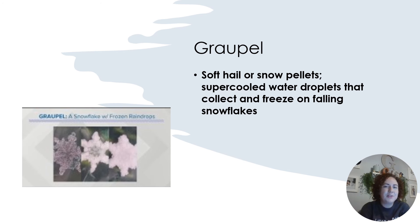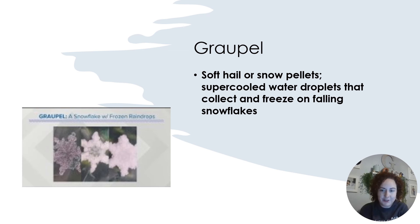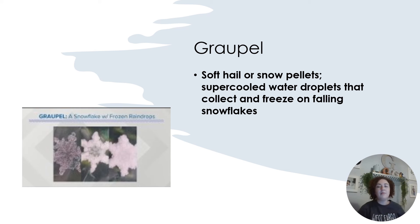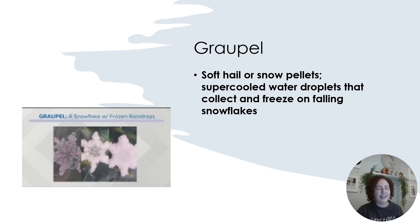Graupel. Graupel is so much fun. Graupel is soft hail or snow pellets — super cold water droplets that collect and freeze on falling snowflakes. We actually got graupel back in 2022–2023, and maybe even the year before that. But as I'm recording this, it's 2024 and I have yet to experience any graupel this winter. Essentially it's just really fuzzy snowflakes — it's kind of fun in that way. Watch this video; they can explain it so much better than I can, but that is just the basics of it.